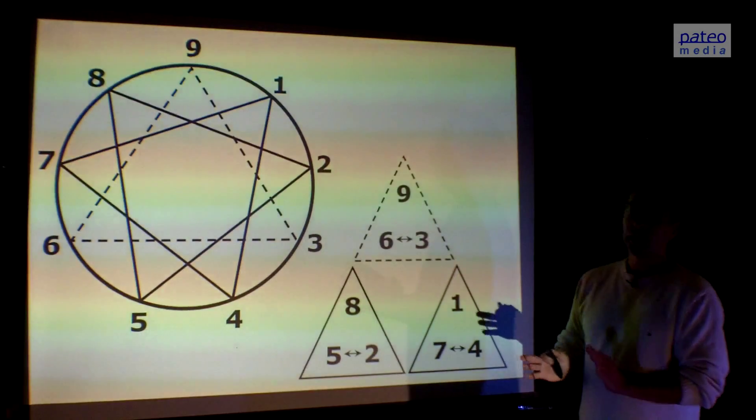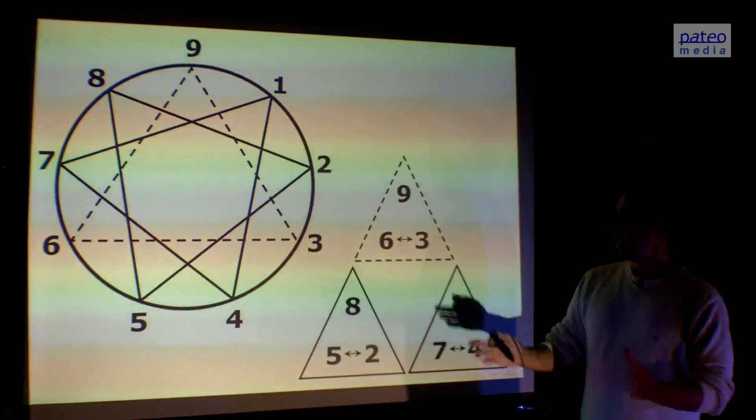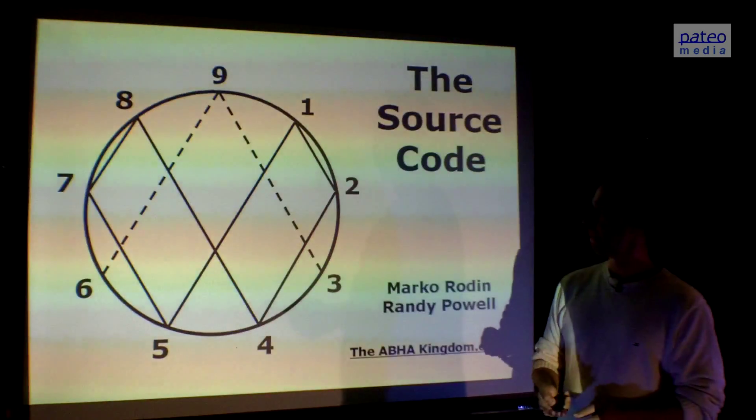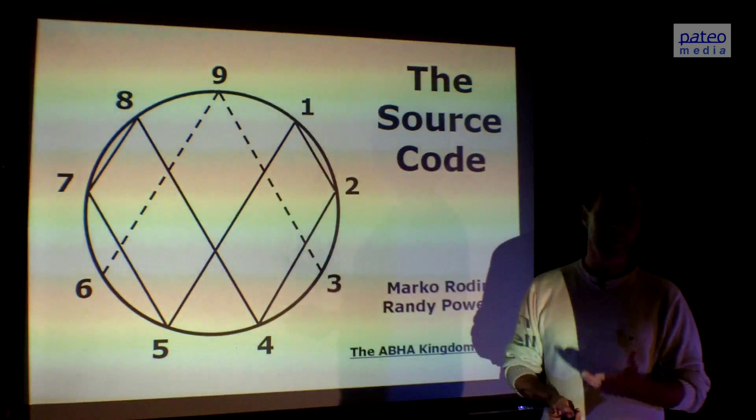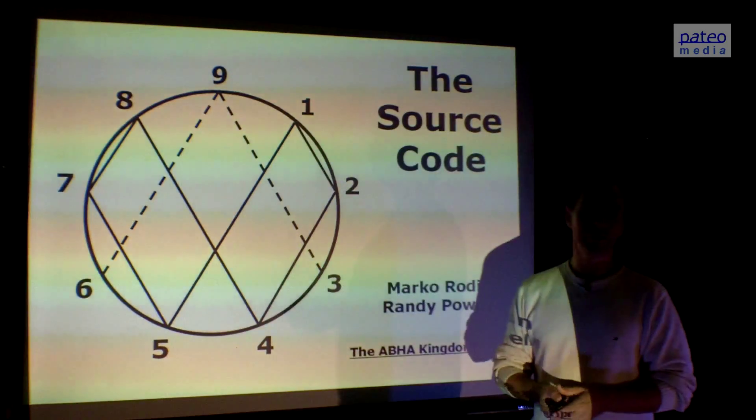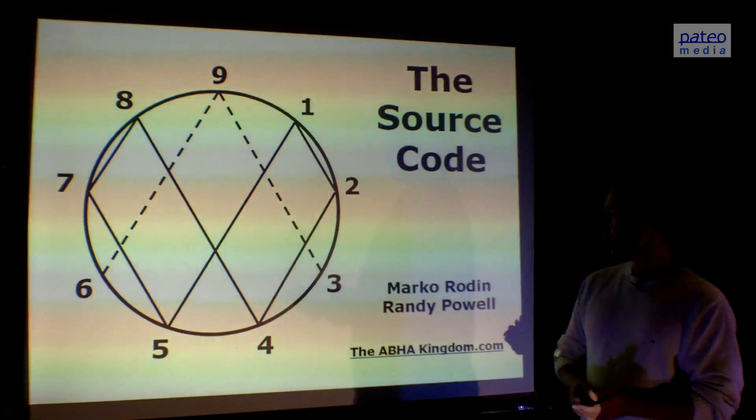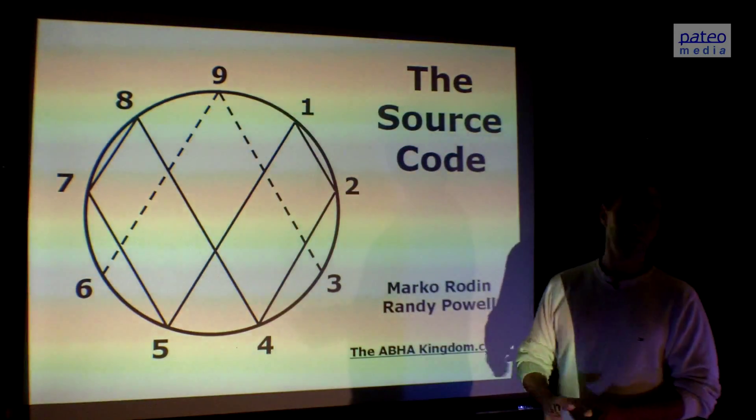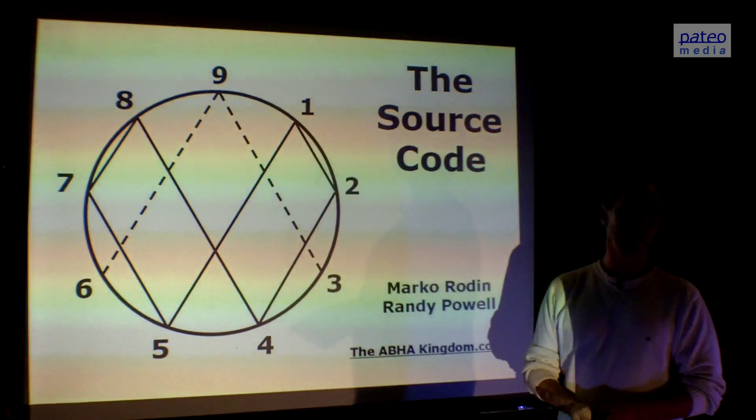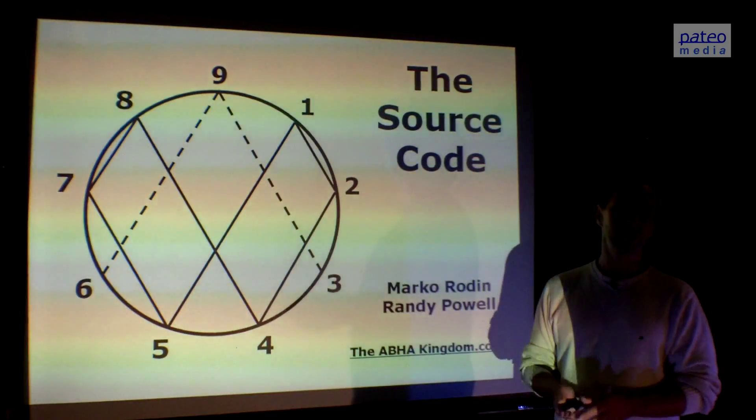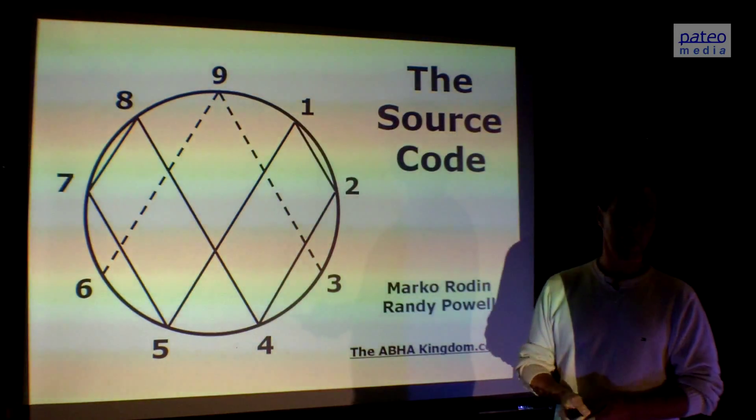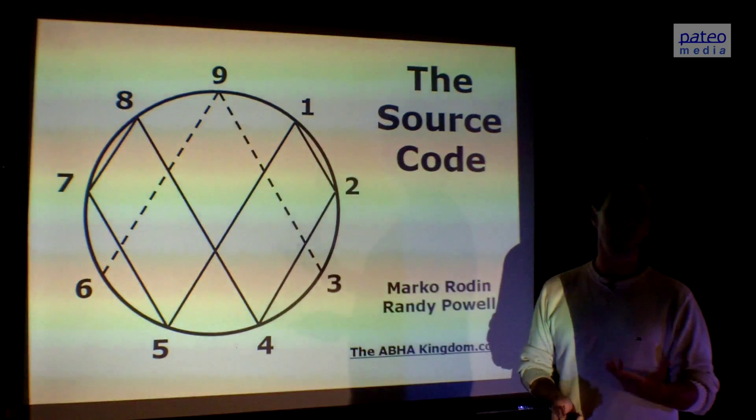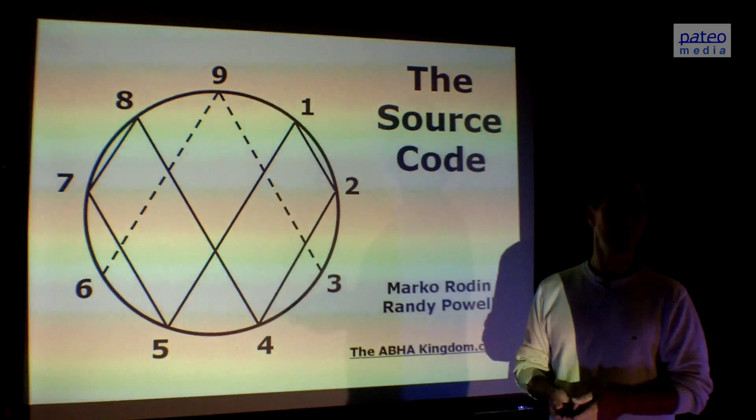These are three cipher groups, and they create together kind of dynamics. It's very visible in this beautiful symbol. If you want to learn more about it, go to the website The Agba Kingdom. That's the website of Randy Powell, and Randy is continuing the work of Marco Rodin. They call it vortex-based mathematics, and it's all present in this symbol. I call this symbol the source code because it's revealing the code from the source world.